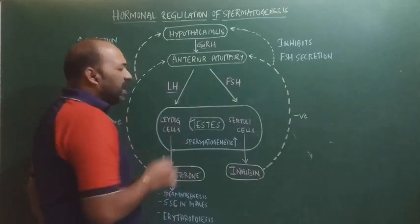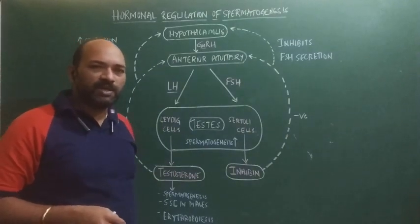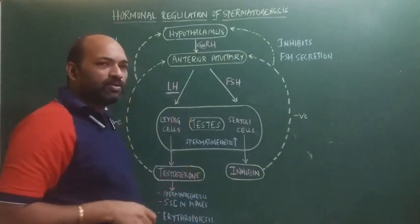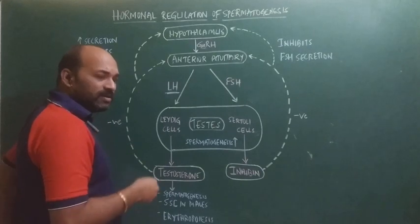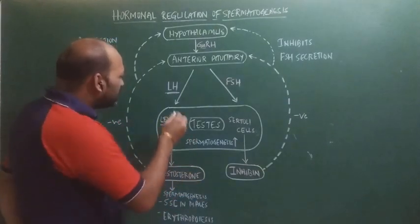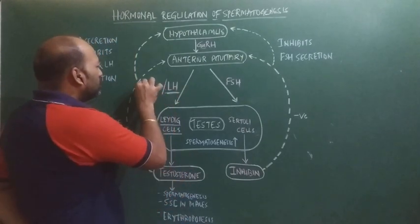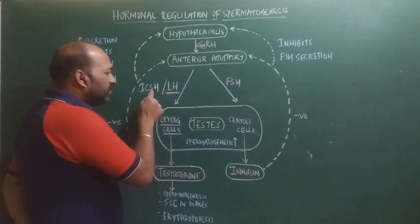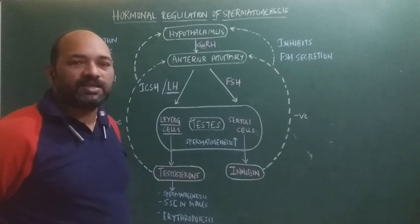The luteinizing hormone acts upon the interstitial cells, which are located between the seminiferous tubules. LH acts upon those interstitial cells — also called Leydig cells — causing them to secrete the hormone testosterone. Because LH stimulates the interstitial cells, it is also called ICSH, which means interstitial cell stimulating hormone, as it stimulates the interstitial cells for the secretion of testosterone.